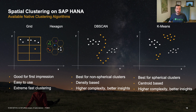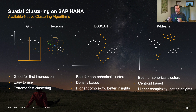In a nutshell, the clustering approaches in HANA are: grid and hexagon — easy to compute; DBSCAN — best for non-spherical clusters, a density-based approach with higher complexity but better insights depending on the use case; and k-means clustering — which optimizes the distance of points to the centroids of the cluster, again with higher complexity but potentially better insights.